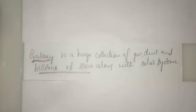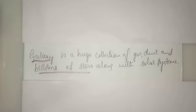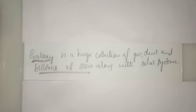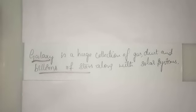Stars are the main sources of heat and light for the other planets. In our galaxy we have the solar system, and in the solar system we have the sun, stars, moons and planets. For the planets, the main source of heat and light is from these stars.